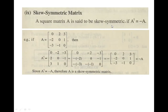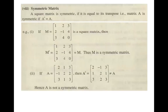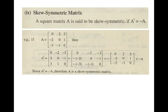Now look at the difference between the two types. If A^T is equal to A, then the matrix is symmetric. If A^T is equal to minus A, then the matrix is skew-symmetric. That is essentially the difference between the two.